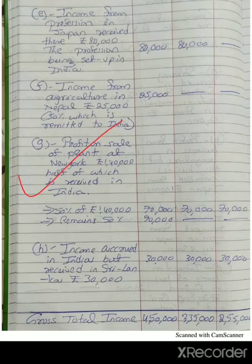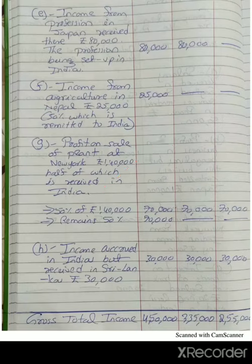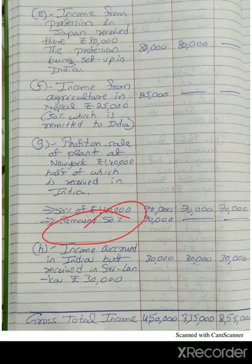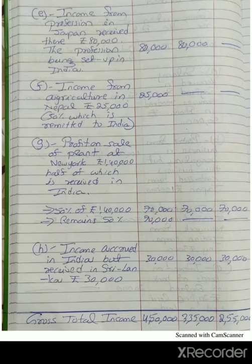Profit on sale of plant at Newark, Rs. 1,40,000, half of which — 50% — is received in India. So out of Rs. 1,40,000, 50%, which is Rs. 70,000, is directly received in India. This Rs. 70,000 is Indian income and is taxable to all irrespective of residential status. The remaining 50% is purely foreign income, taxable only to the ordinary resident in India, not to the non-resident or not ordinary resident in India.